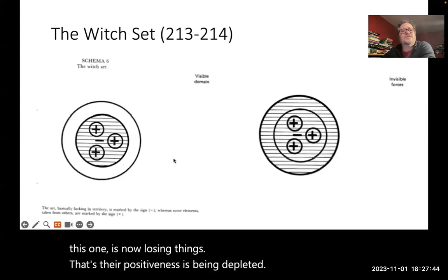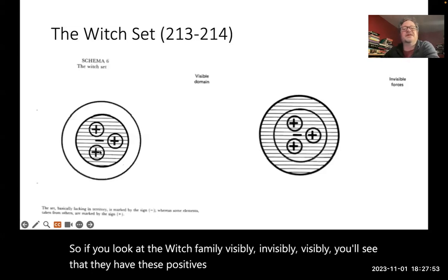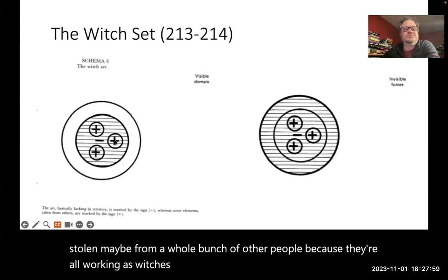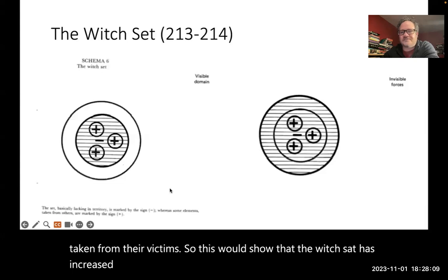So if you look at the witch family, visibly, invisibly. Visibly, you'll see that they have these positives within their domain that they've stolen. Maybe from a whole bunch of other people, because they're all working as witches. So these positives are things that were taken from their victims. So this would show that the witch set has increased. Notice it's not flowing out anywhere. They're not losing anything.